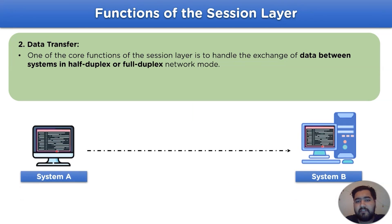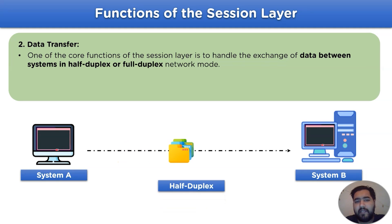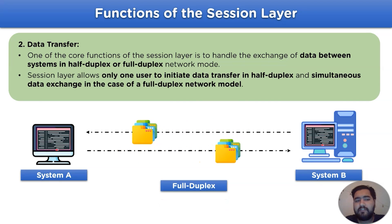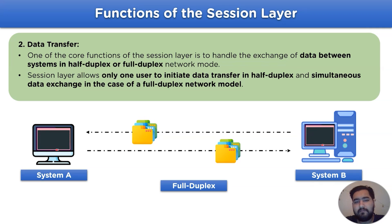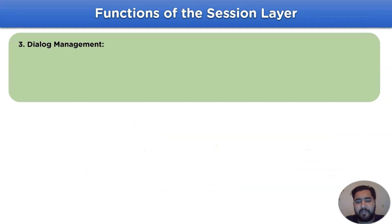One of the core functions of the session layer is to handle the exchange of data between systems in half duplex or full duplex network mode. The session layer allows the user to initiate data transfer in case of half duplex, and simultaneous data exchange in case of a full duplex network model.